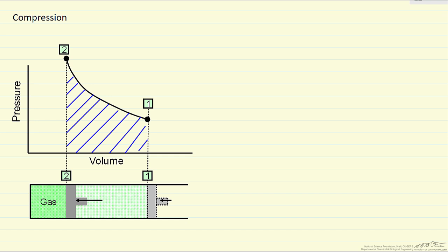For compression, we start at the low pressure point one and go to the higher pressure. Again, work for a reversible process is minus the integral of the pressure of the gas times dV. The reversible work looks identical in form, but the sign of the numerical value is opposite — we're putting work into the system to compress it as the gas moves from a larger volume to a smaller volume.